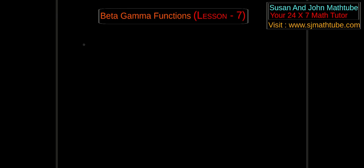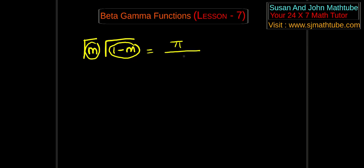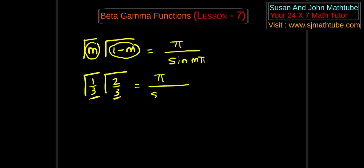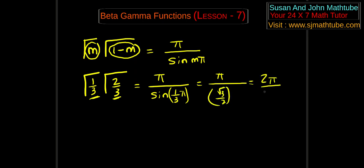Before we start, I have to teach you one small property discussed in lesson number 1 of beta gamma functions. The property is: if you have γ(m) · γ(1−m), meaning the sum of the arguments inside the gamma equals 1, then the answer is π / sin(mπ). Always put the smaller one inside. For example, γ(1/3) · γ(2/3) — since the sum is 1, the answer is π / sin(π/3) = π / (√3/2) = 2π/√3.